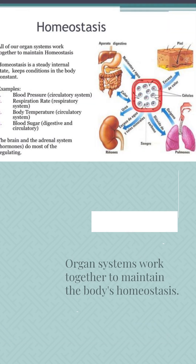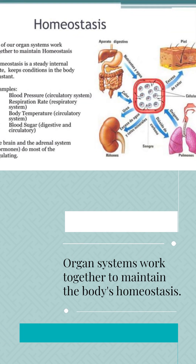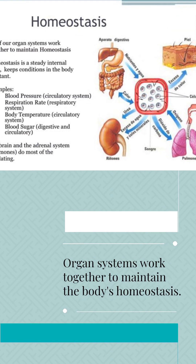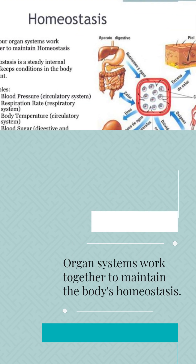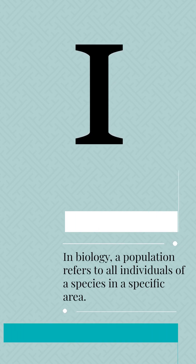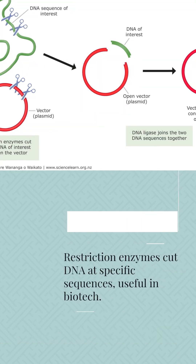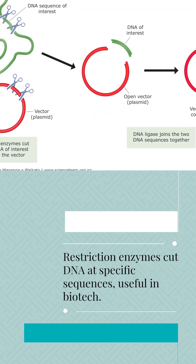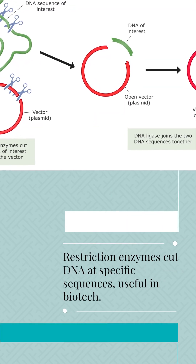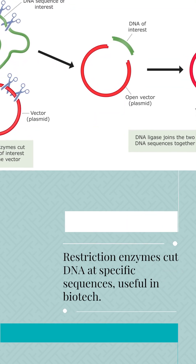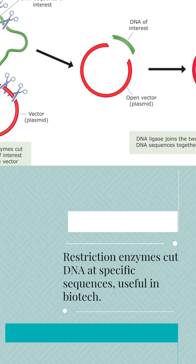Organ systems work together to maintain the body's homeostasis. In biology, a population refers to all individuals of a species in a specific area. Restriction enzymes cut DNA at specific sequences, useful in biotech.